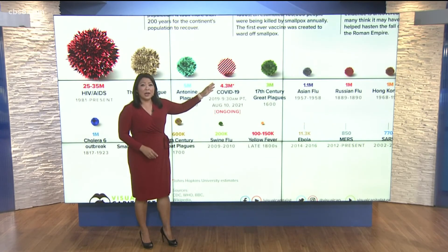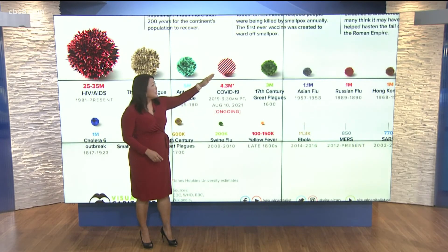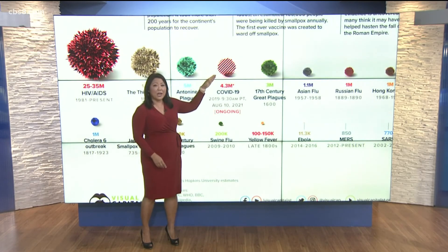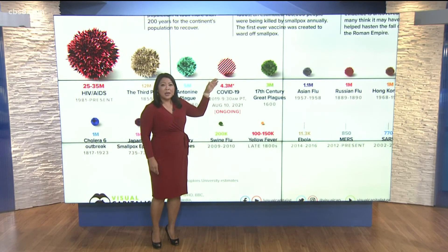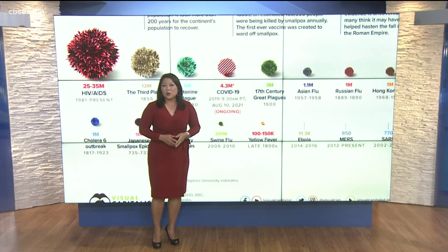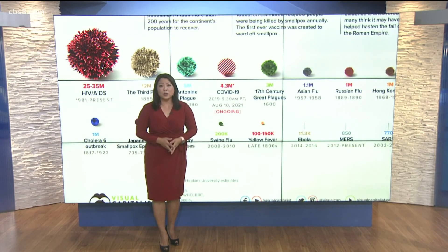COVID-19 right now is represented with lines through the virus icon because the death toll is still growing relatively quickly.